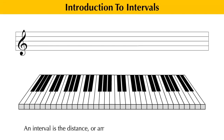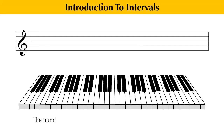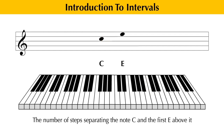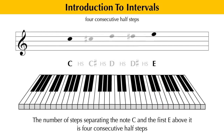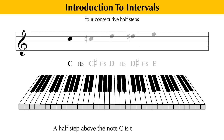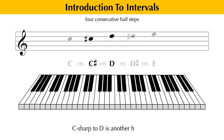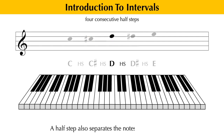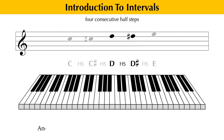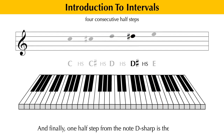An interval is the distance or amount of steps separating any two notes. For example, the number of steps separating the note C and the first E above it is four consecutive half steps. A half step above the note C is the note C sharp. C sharp to D is another half step. A half step also separates the notes D and D sharp. And finally, one half step from the note D sharp is the note E.